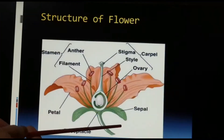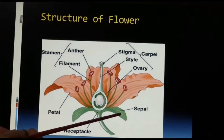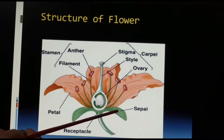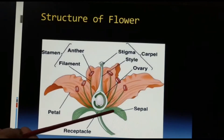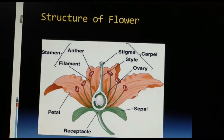Here you can see children, this is the sepal. All the sepals unitedly constitute the first whorl which is called the calyx. Calyx is green in colour. In the bud stage, the calyx encloses the rest of the flower and they generally are concerned with the protection of the flower in the bud stage.